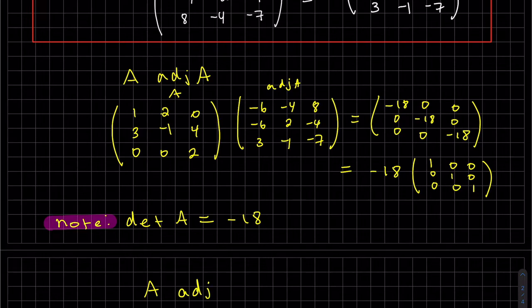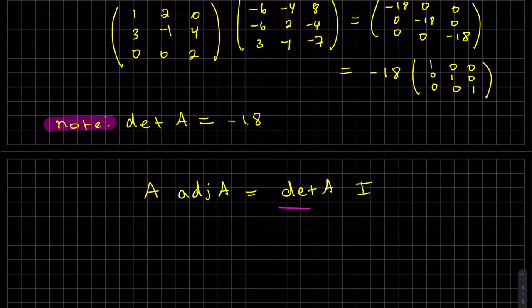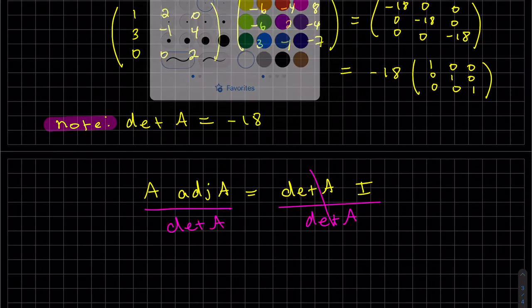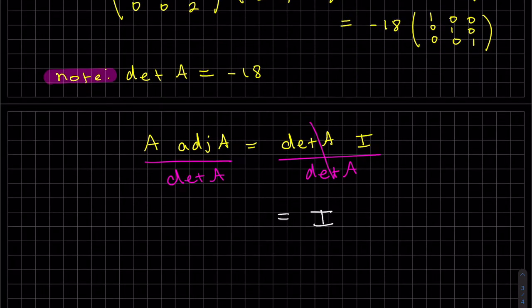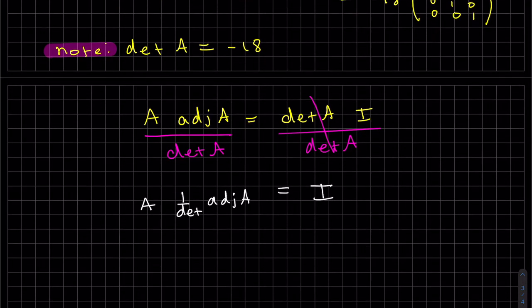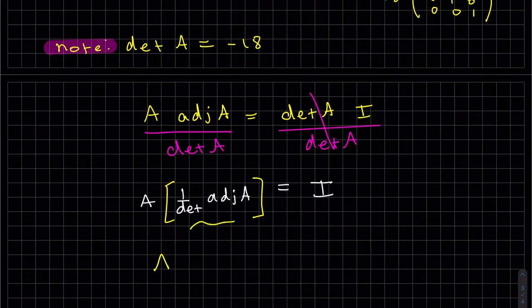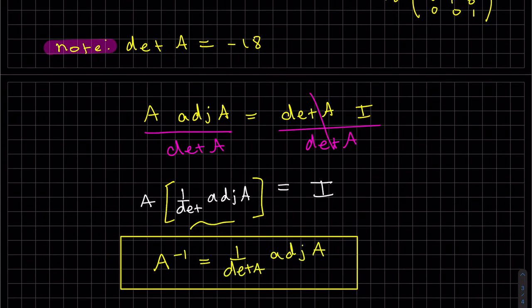So A adjoint A is equal to the determinant of A. We don't need that I. I mean, you could do some math magic here. I'm gonna divide both sides by determinant of A. So what we have here, on the right, there's A times one over the determinant of adjoint A. Well, that means we have another formula for the inverse.